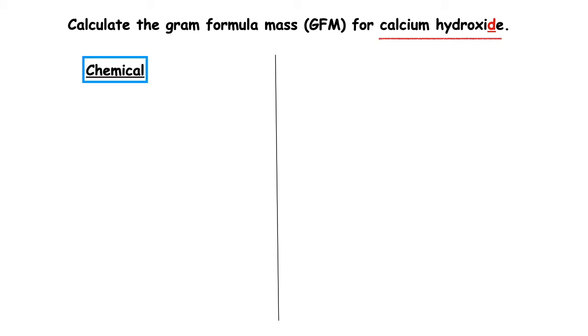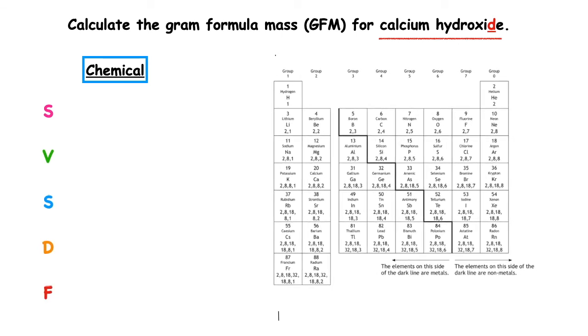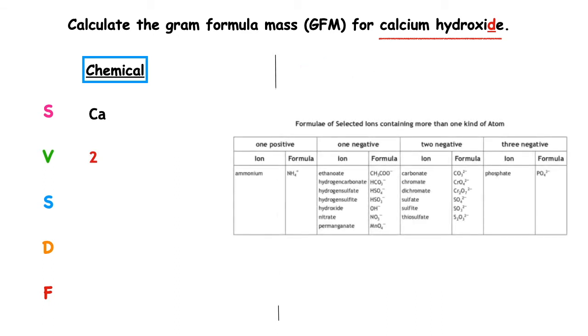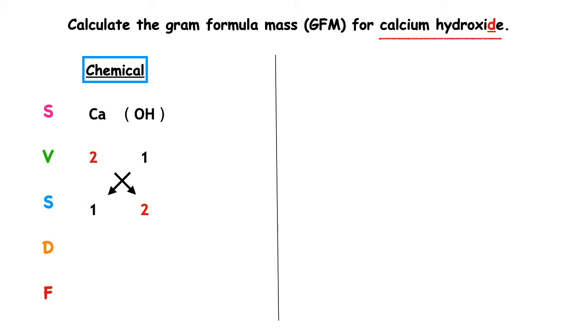Calculate the gram formula mass for calcium hydroxide. Now be careful — although this ends in '-ide', it's one of the tricky ones found on page 8. We start with our SVSDF. The symbol for calcium is Ca, found in group 2, valency 2. Hydroxide is not an element; we find it on page 8. The symbol is OH — keep a bracket around it — valency 1. We swap the valencies over; the highest number both can be divided by is 1. So the chemical formula is Ca(OH)₂.